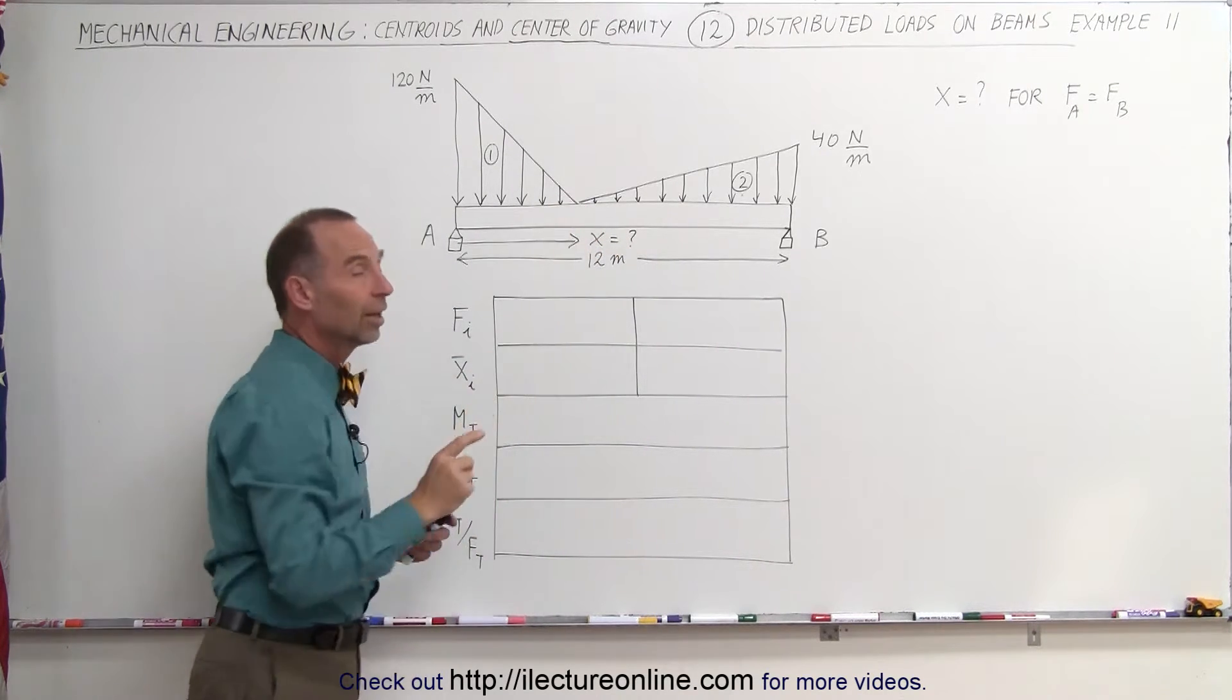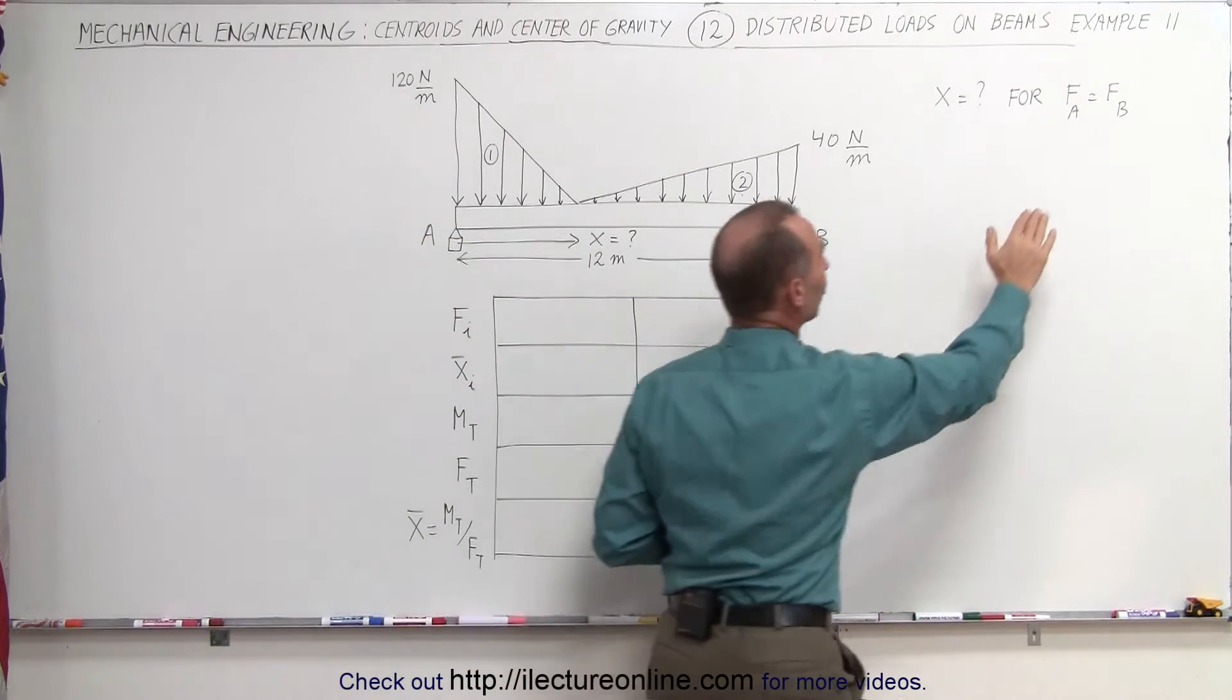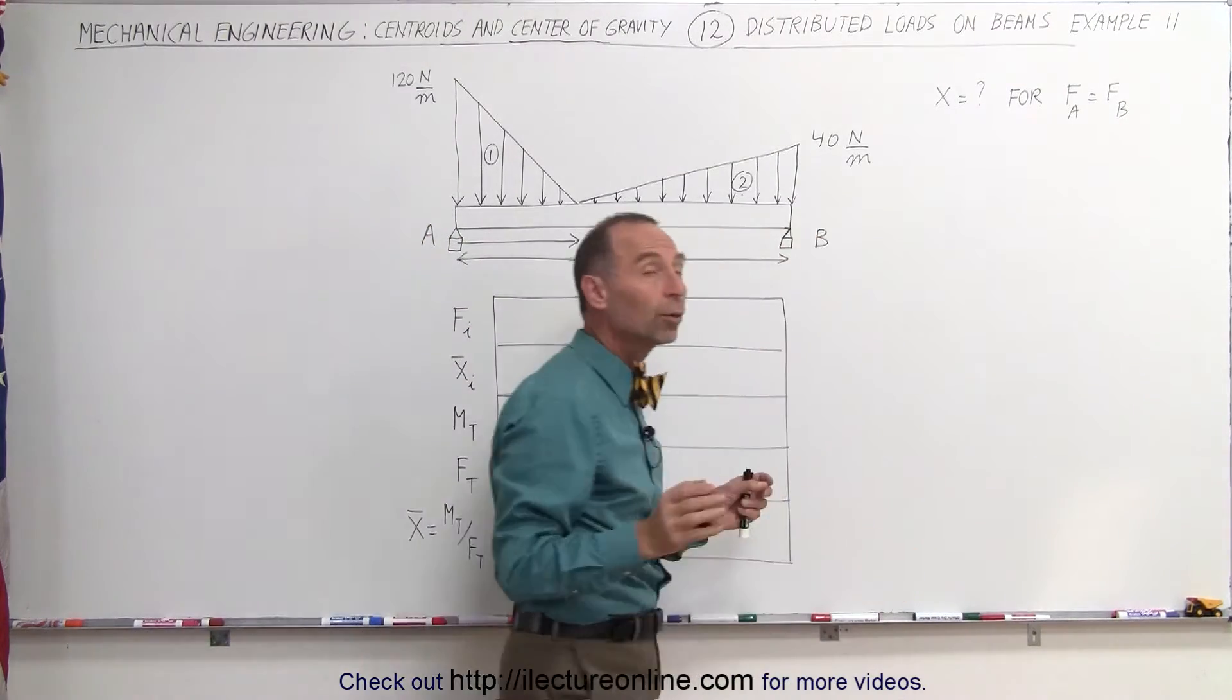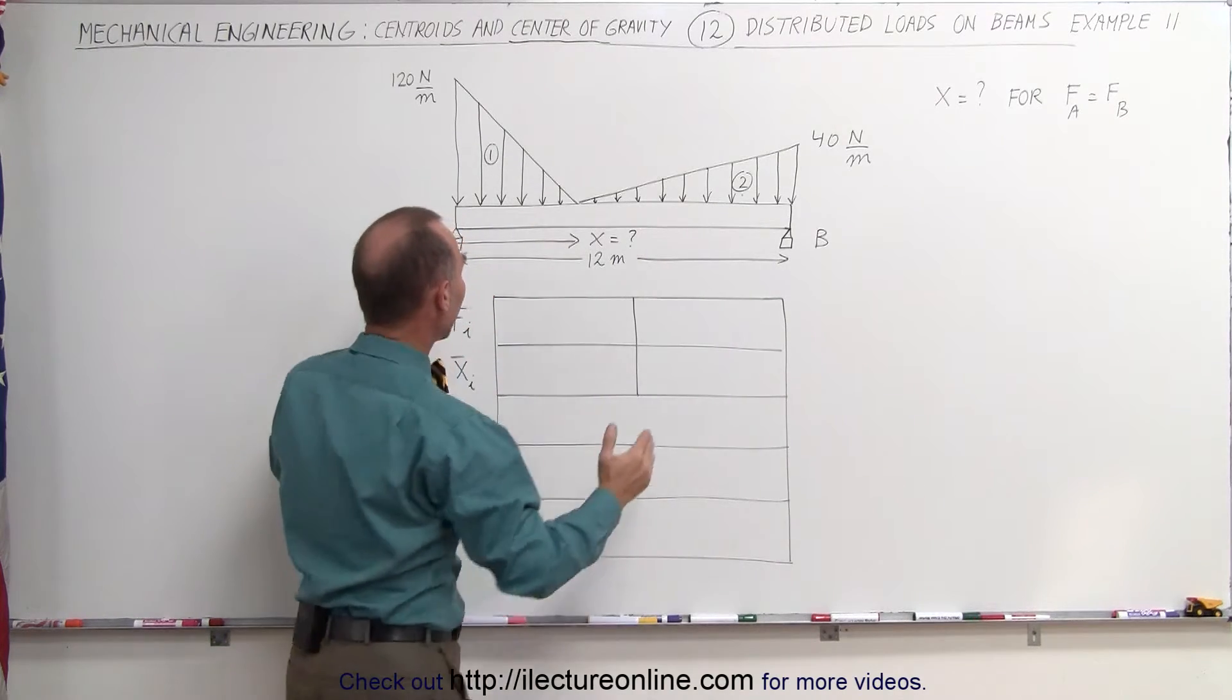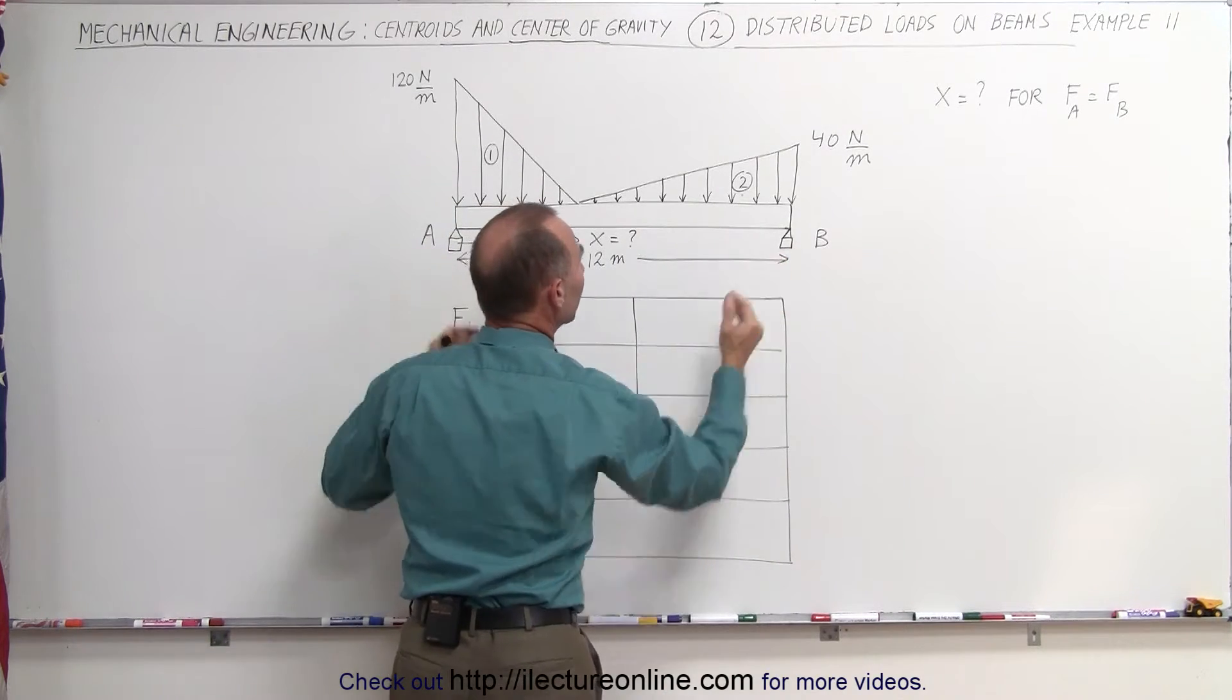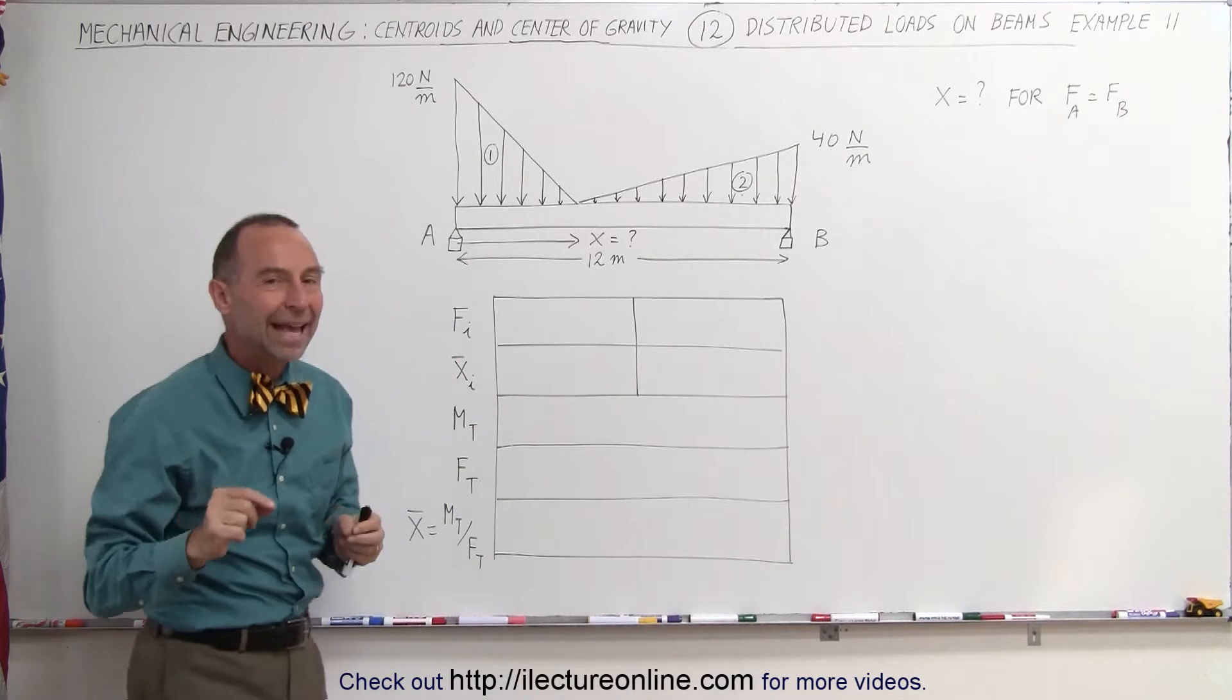The beam is 12 meters long and they're asking us to find the value for x. Where should we put this zero point so that the force supported by A equals the force supported by B? In other words, that the reactionary force at both ends of the beam are equal to each other so that they carry half the load.